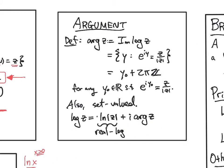So the argument function, as I said, is defined to be just the imaginary parts of log z, which again is going to be set-valued. It's all y such that e to the iy gives me z over modulus of z. If I have one of these values, I can get the rest by translating by multiples of 2π.